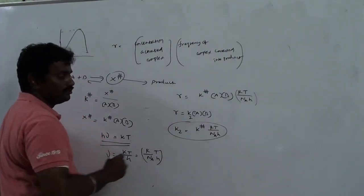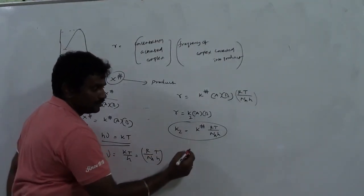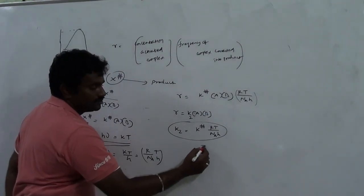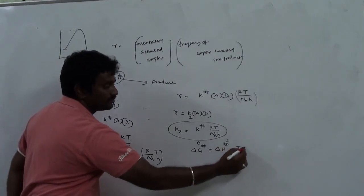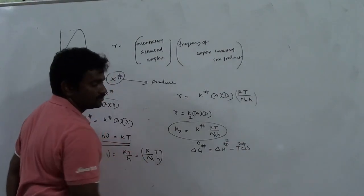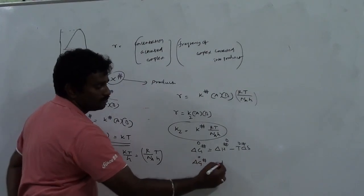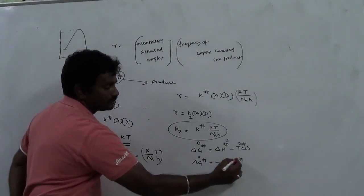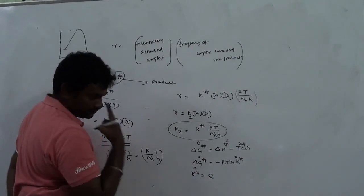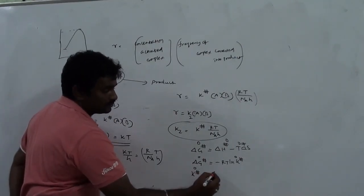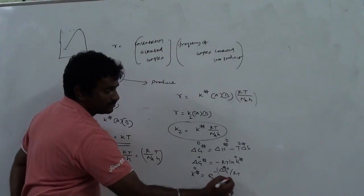Now K‡ can be obtained from thermodynamics. We know that ΔG‡ equals ΔH‡ minus TΔS‡. We also know that ΔG‡ equals minus RT ln K‡. Therefore K‡ equals e to the power of minus ΔG‡ divided by RT. This can be written as K‡ equals e to the power of minus (ΔH‡ minus TΔS‡) divided by RT.